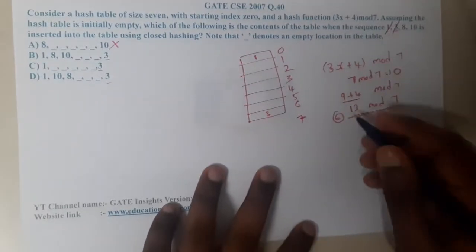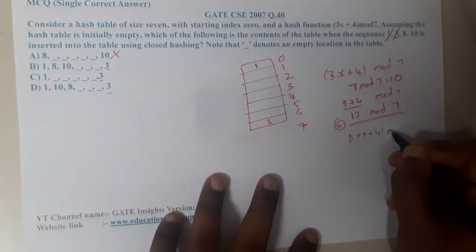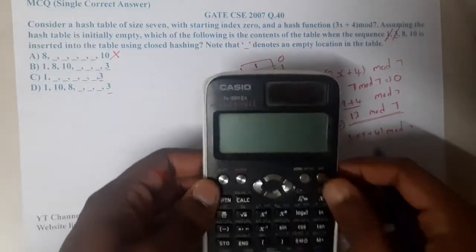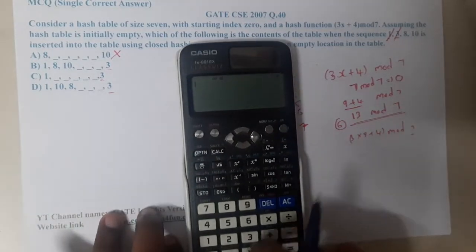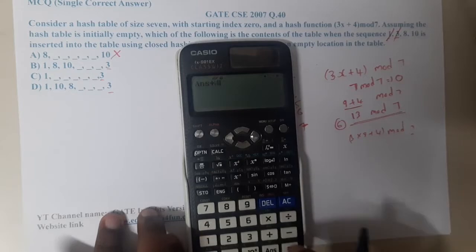Let us check for 8. 3 times 8 plus 4. You can use a calculator if you're getting confused. Do 3 times 8 first.